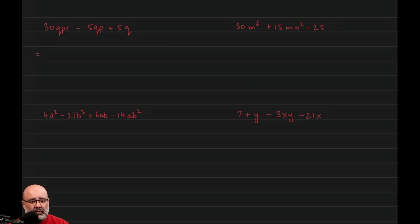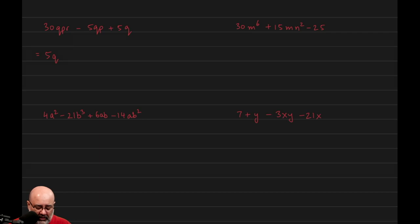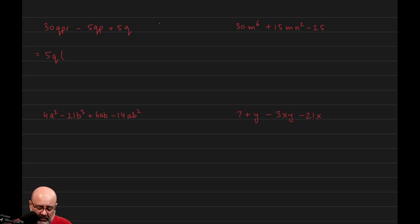So in this case, we first look at the numbers. The smallest number is 5, and 5 goes into 30, negative 5, and 5, so 5 works. Now we look at the variables — all the terms have a Q in common, so we can factor out a Q. The moment we write down our GCF, we open parentheses. How do we know what goes inside? We divide the term by the GCF. So if we divide 30QPR by 5Q, the Q will cancel with the Q, and the 5 will cancel with the 30, leaving us with 6PR.